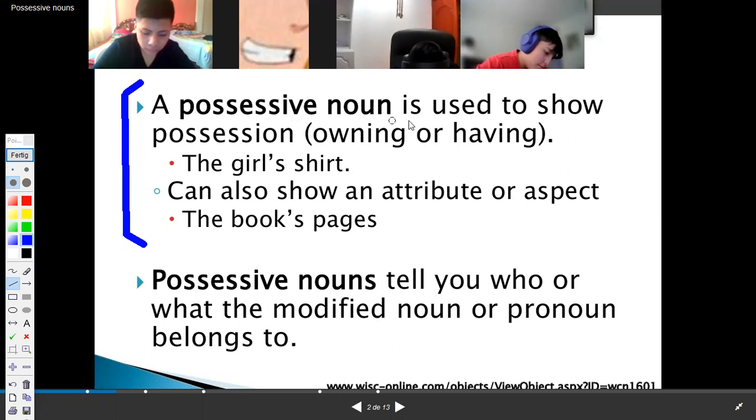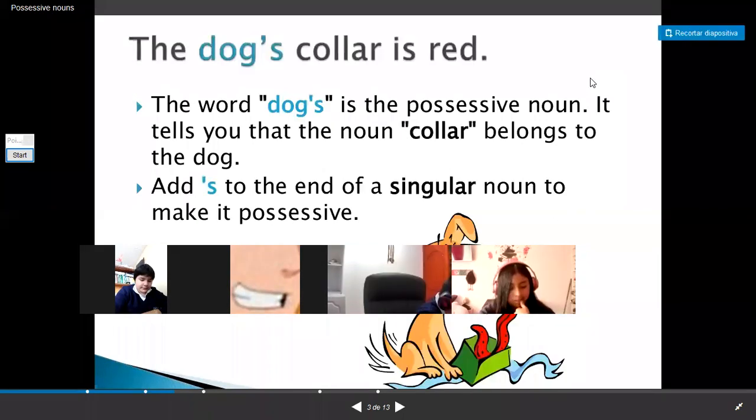A possessive noun is used to show possession. Show possession. Owning or having. Having. Example. The girls share. Thank you. Thank you, mister. Okay. Copy, please. A possessive noun is used to show possession. Similar, sencillito como esto. Un sustantivo posesivo se usa para demostrar posesiones. Lo que yo poseo o lo que yo tengo. Example. The girl shared. Only this. Attention, please.